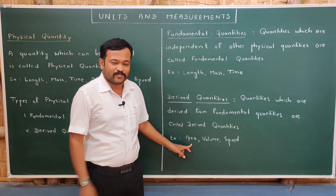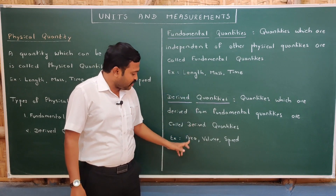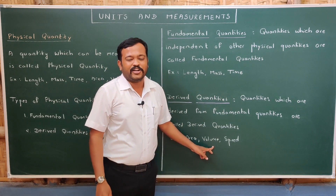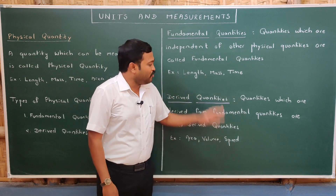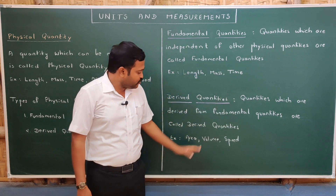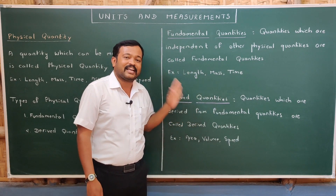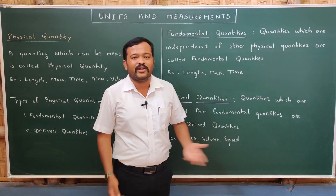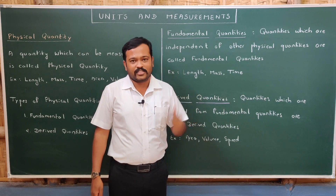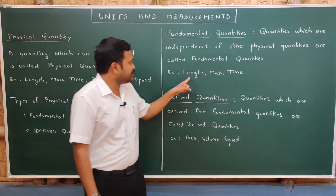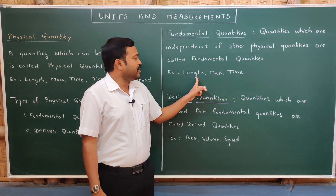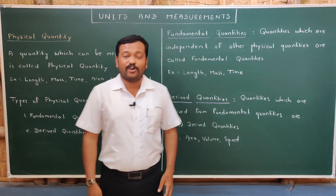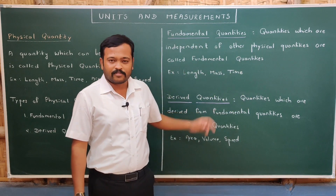Area equals length multiplied by breadth — both are forms of length, so area is a derived quantity. Volume equals length multiplied by breadth multiplied by height — it depends on three quantities, all forms of length, so volume is also a derived quantity. Speed equals distance divided by time taken — distance is a form of length. So speed depends on length and time, making it a derived quantity. Quantities that depend on fundamental quantities are called derived quantities.